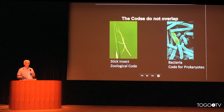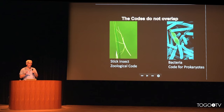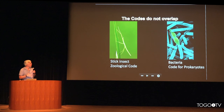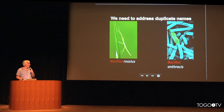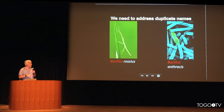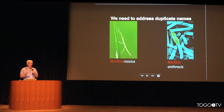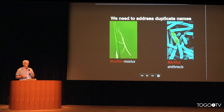Even though scientific names are a very precise way to name species, there are some limitations to using the codes. These codes do not overlap — they do not recognize names produced in other codes. For example, here we have two separate, unrelated species: one is a stick insect described under the zoological code, and the second is a bacterium described under the code for prokaryotes. They share a genus name, Bacillus — Bacillus rossius and Bacillus anthracis. The database and its curators have to be aware of this shared genus name and adapt to redundancies generated like this.